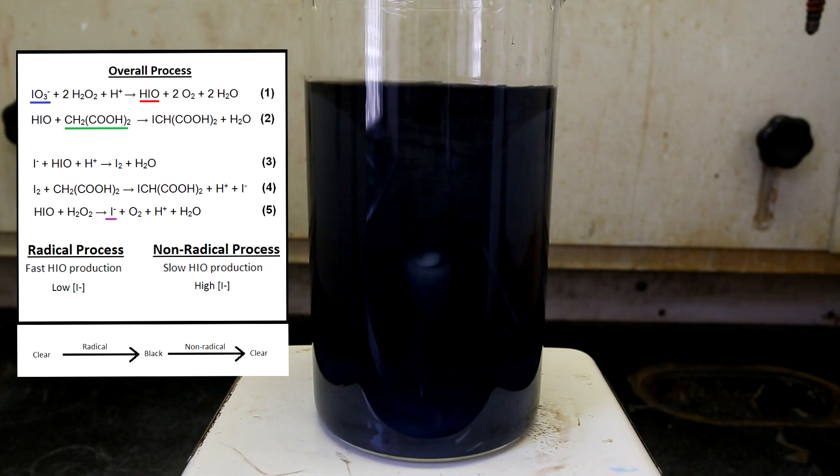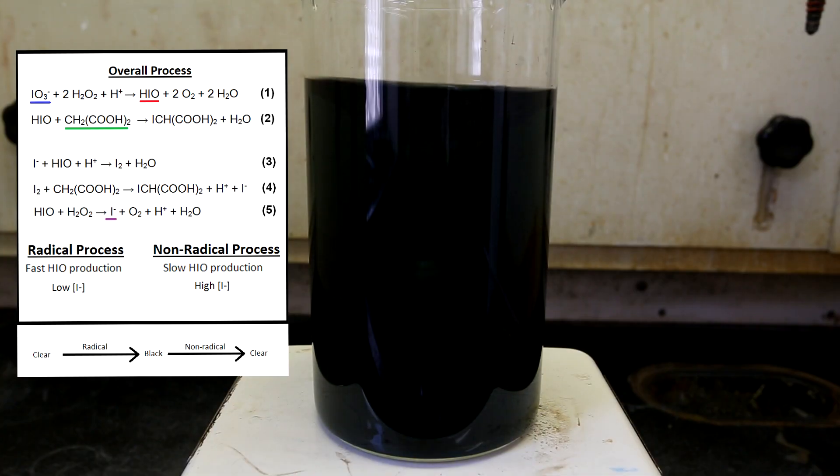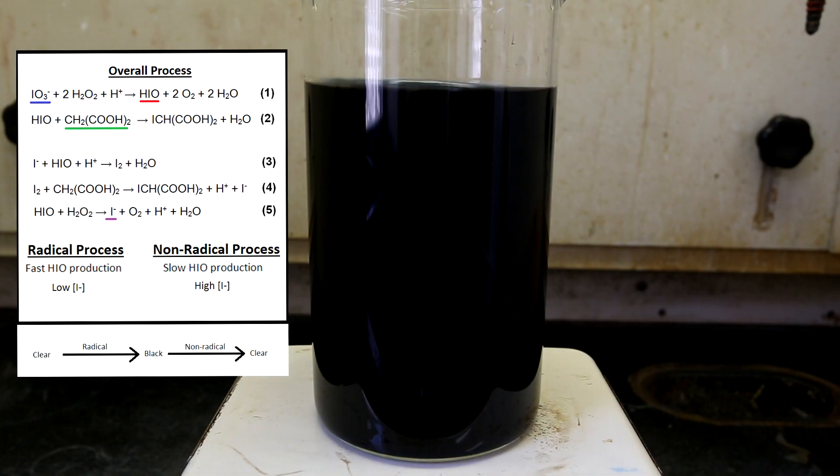I'll quickly explain why the radical process ends. Near the end of the radical process, the concentration of iodide in solution is very high. The iodide reacts with iodous acid, which is an extremely important reaction for perpetuating the radical process. This means that if the concentration of iodide is high enough, it can effectively shut down its own production, which is exactly what it does.